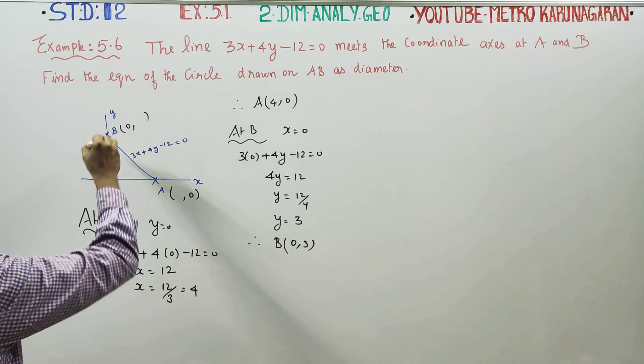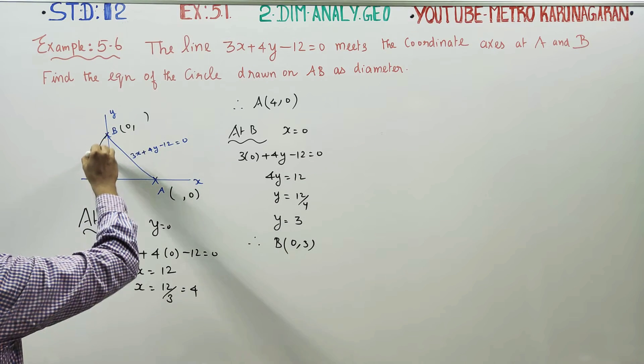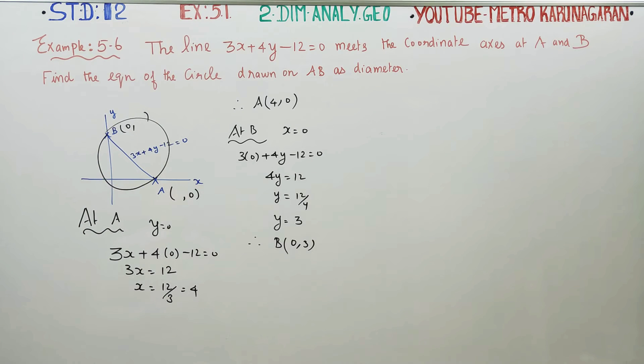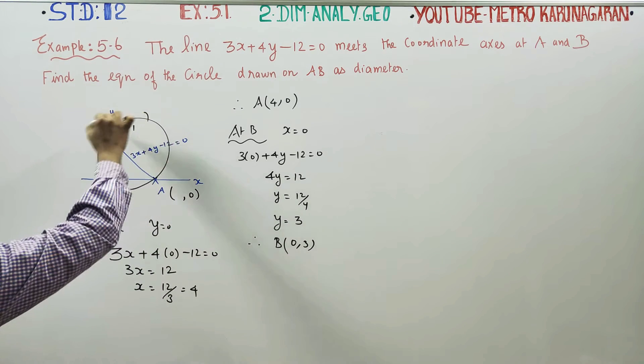With AB as the diameter, a circle has been drawn. We are going to find the equation of this circle.